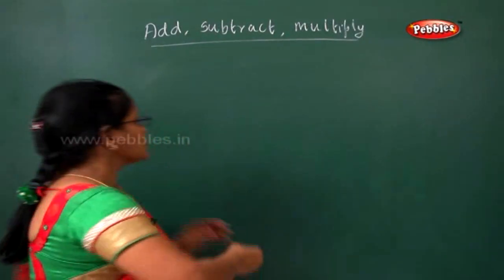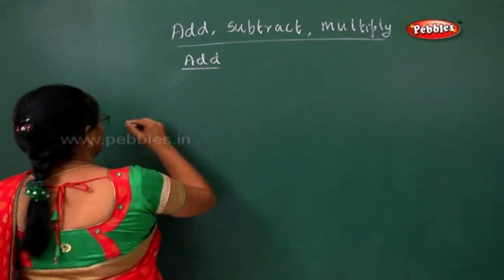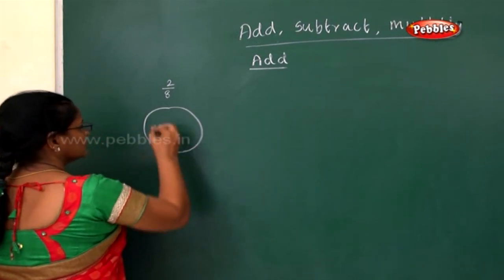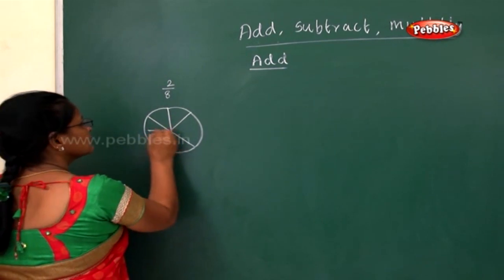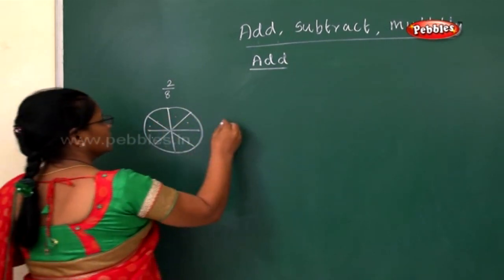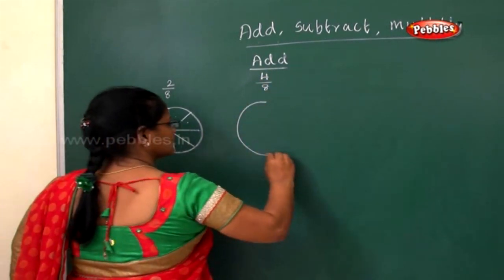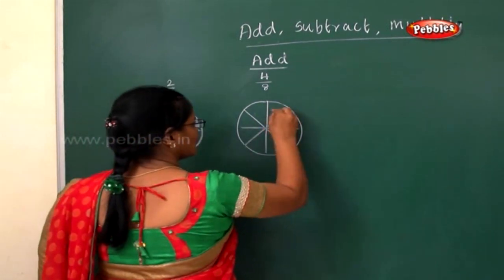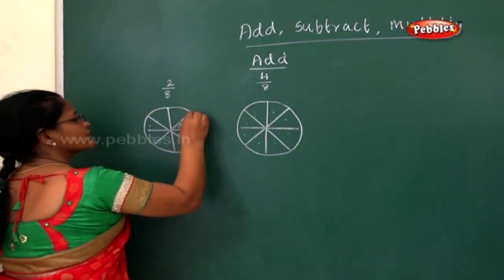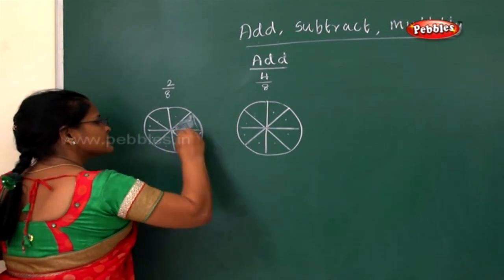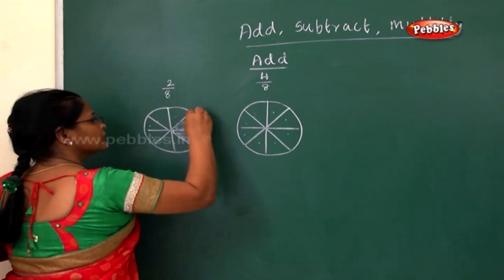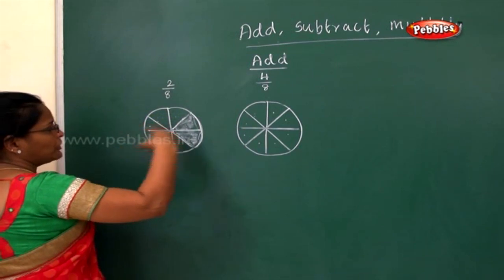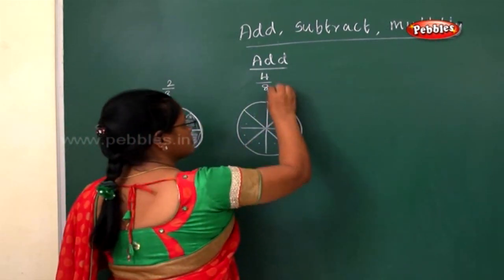Next, I will teach you addition of fractions using a small diagram. Take 2/8 — 2 parts are shaded out of 8 parts. Count: 1, 2, 3, 4, 5, 6, 7, 8. Now in the second figure, 4 parts are shaded out of 8 parts.